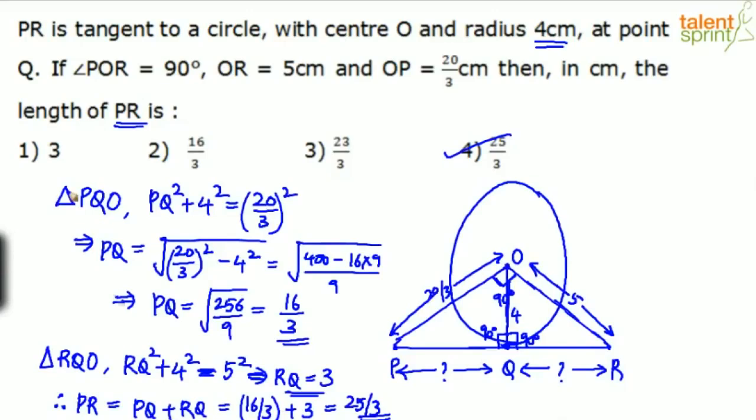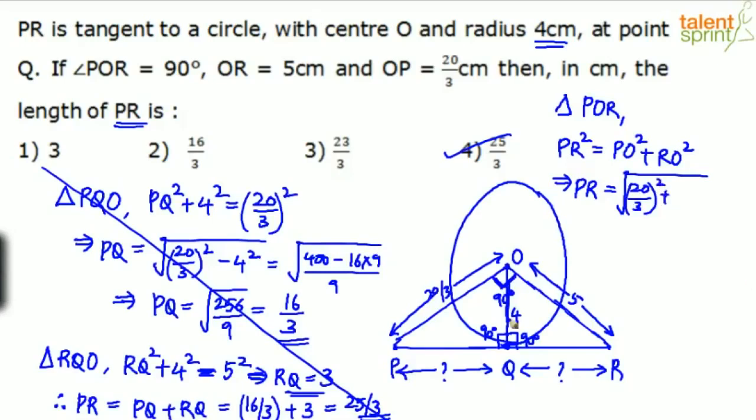This actually is a linear solution. We can directly apply Pythagoras theorem to the bigger triangle. Consider the triangle POR. This is the right angle triangle. So here we can say PR squared. This angle is 90 degrees. So we can say PR squared equals to PO squared plus RO squared. So from this, PR will be root over PO 20 by 3 squared plus 5 squared.